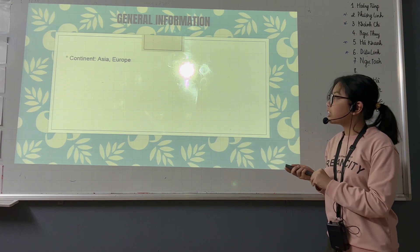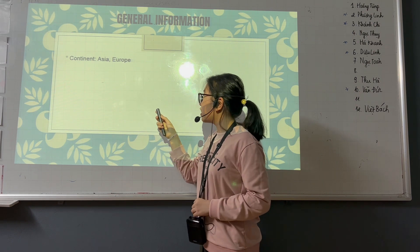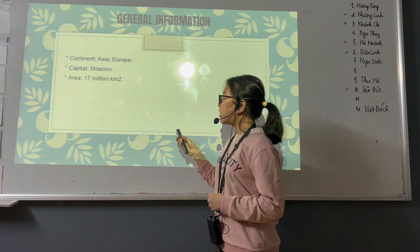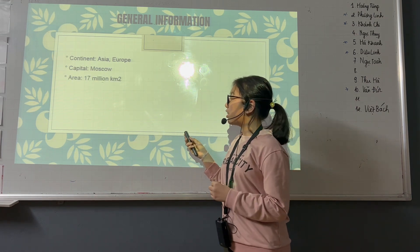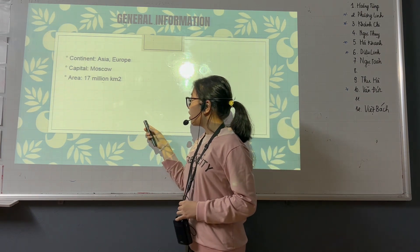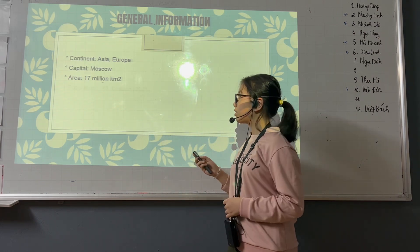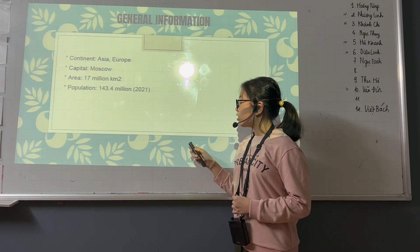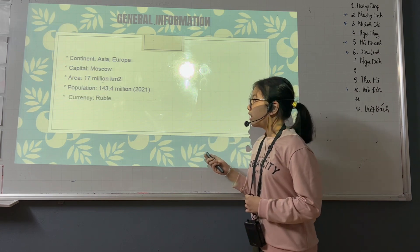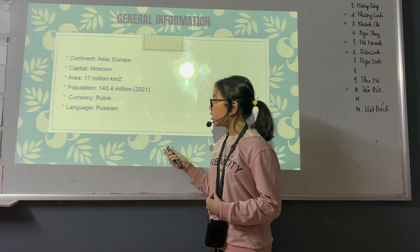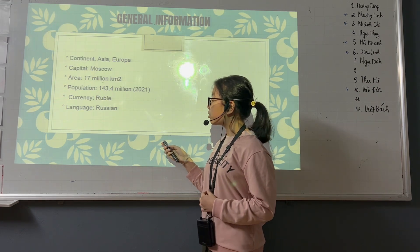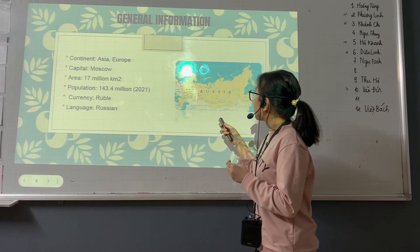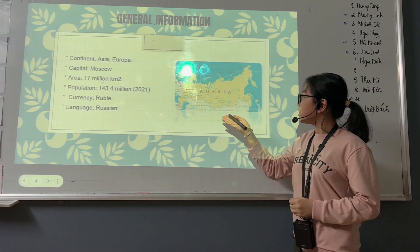General information. The continent of Russia is Asia and Europe. The capital is Moscow. Russia has the largest area in the world — its area is 17 million square kilometers. The population is 143 million in 2021. The currency is the ruble. In Russia, the people speak Russian and some English.